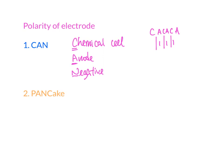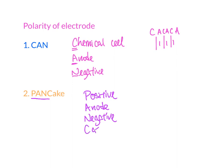The other mnemonic is PANCAKE. From the first four letters — P-A-N-C — P means positive, A means anode, N means negative, and C means cathode. So PANCAKE refers to the electrolytic cell, where the positive terminal is the anode and the negative terminal is the cathode.